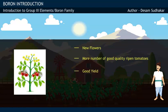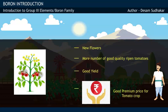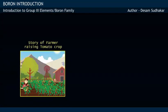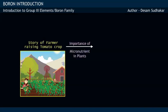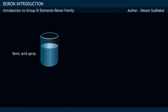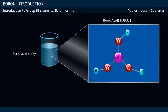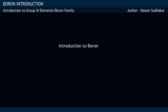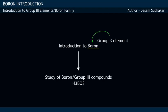Ramu gets a good produce and premium price for his crop. This story of a farmer raising tomato crop tells us the importance of the micronutrient boron in plant growth, flowering, and the fruit-bearing process in plants. The boric acid spray contains a compound called boric acid, whose structure shows that it contains a chief element called boron. This story allows us to introduce boron, a Group 3 element, and study about its compounds.